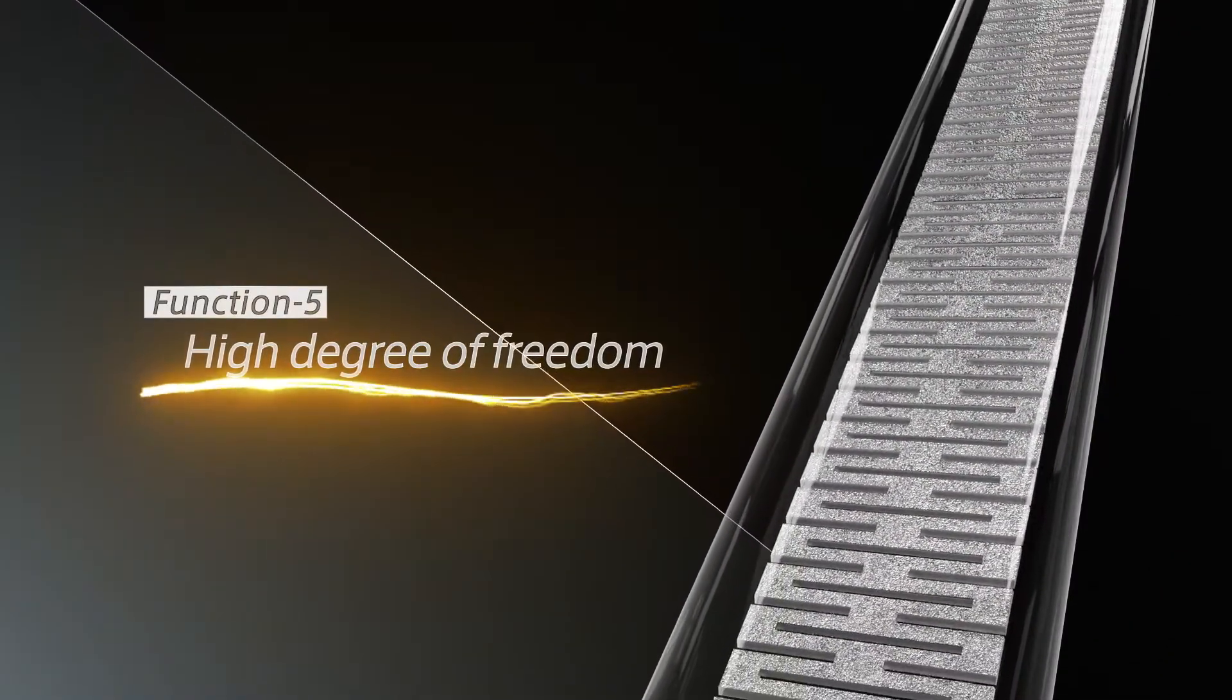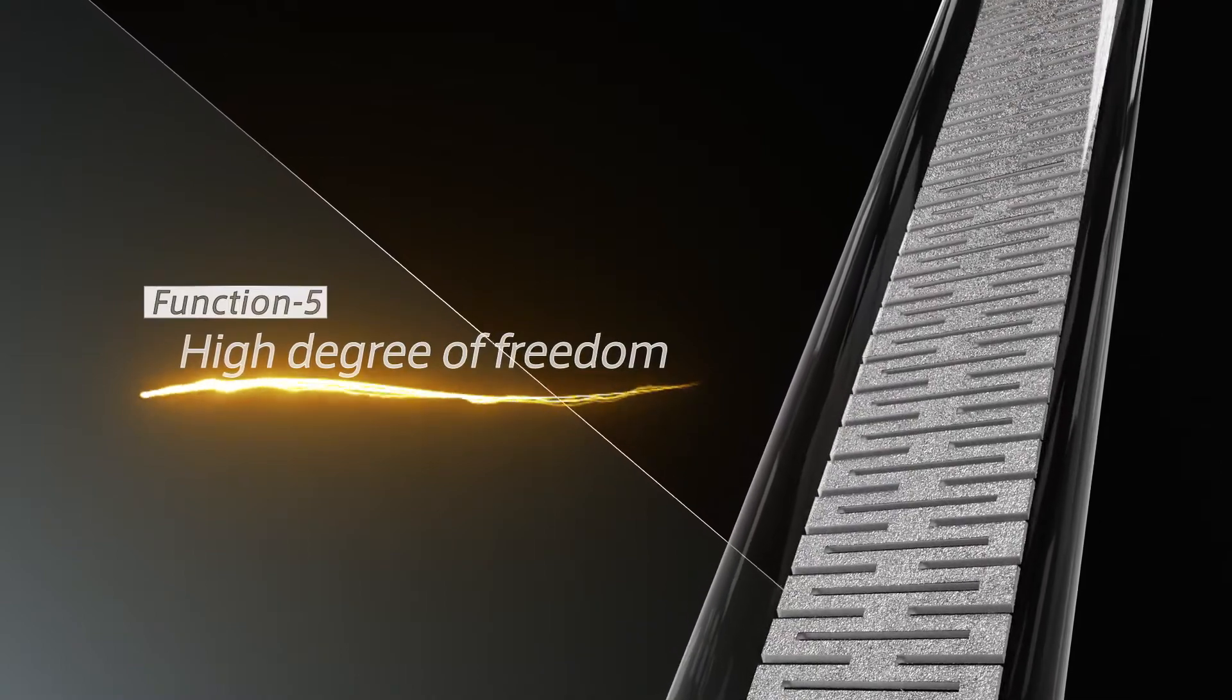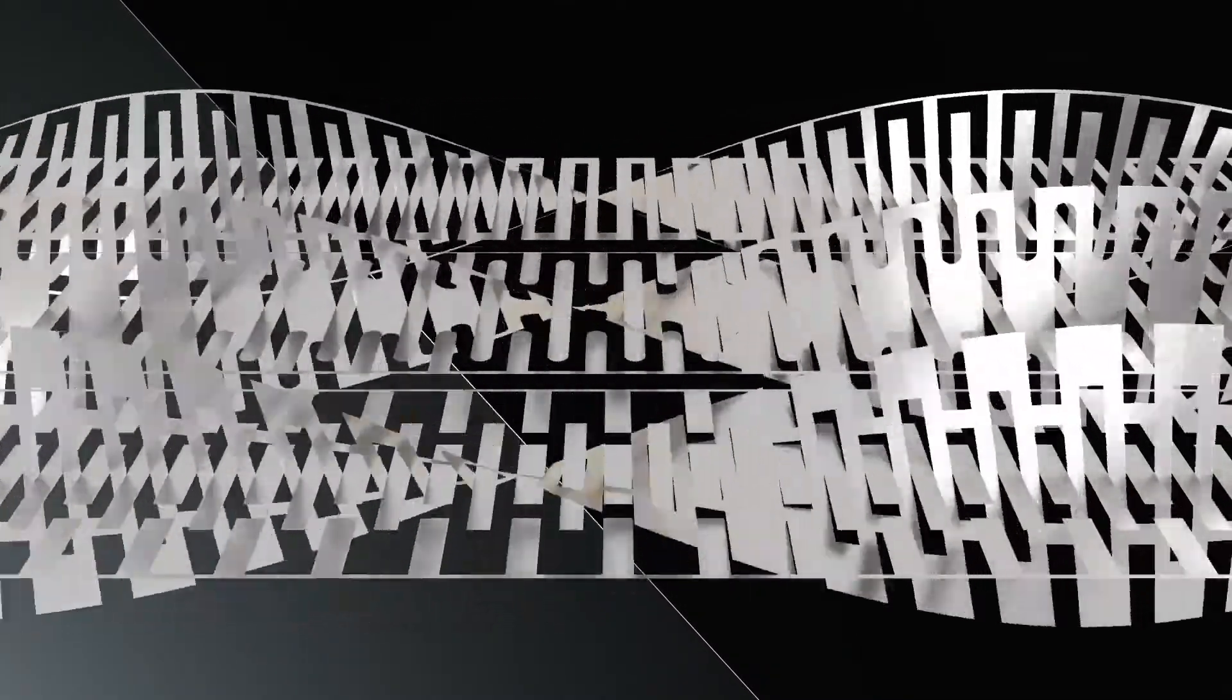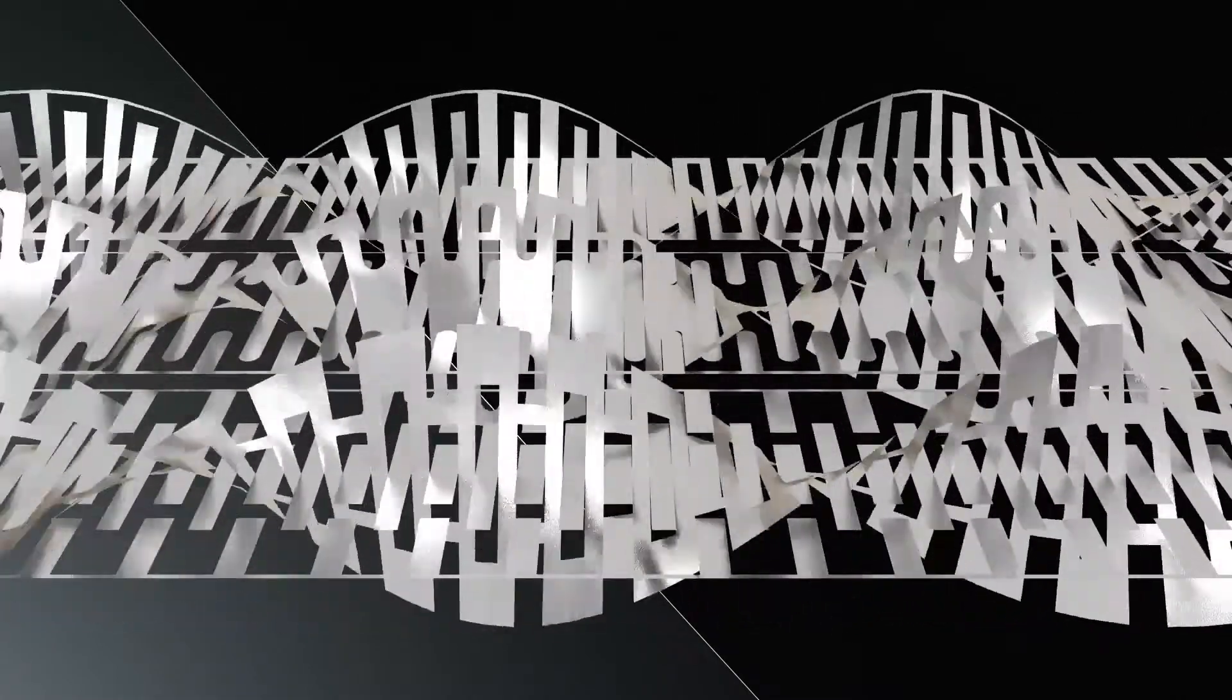Function 5: High degree of freedom. Our proprietary technology turns flexible graphite sheet into various heaters. It has a high degree of freedom, enabling optimal control of heat generation temperature through unique slit designs. This makes it possible to change the heat generation temperature inside the sheet.